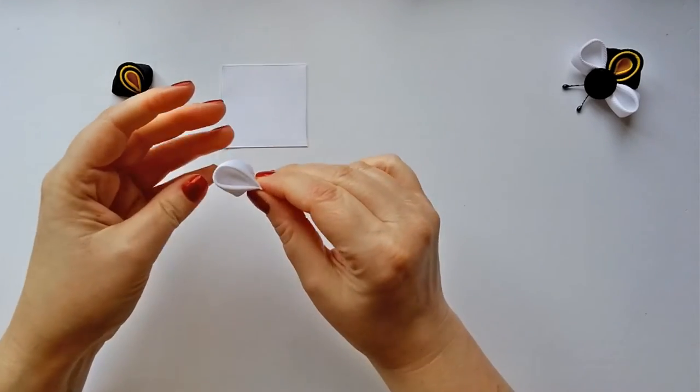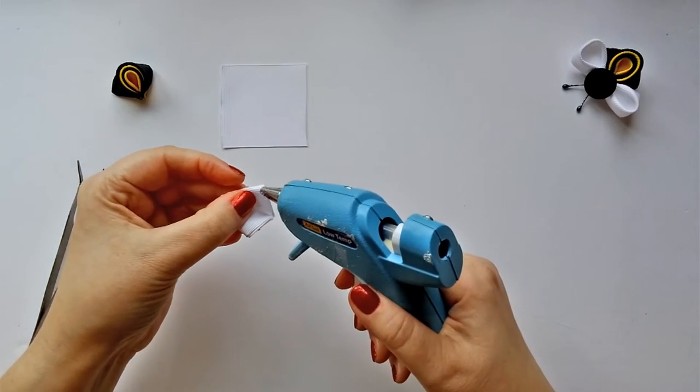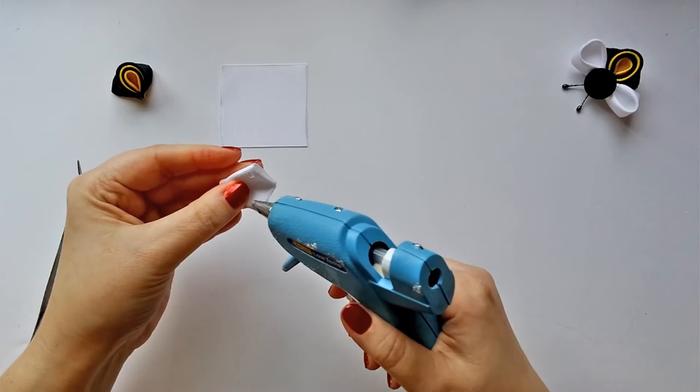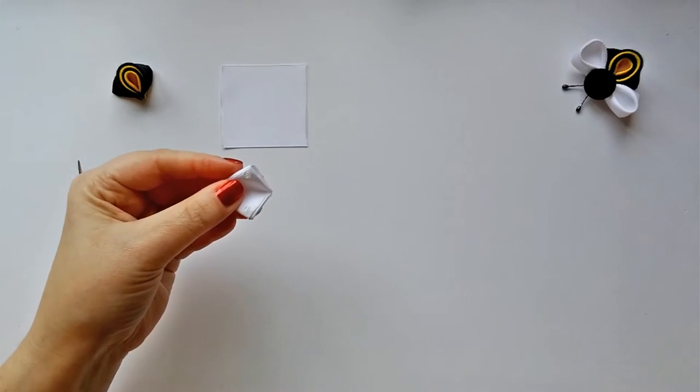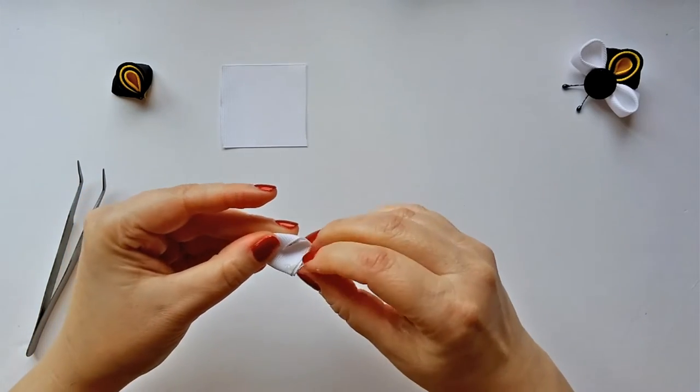Turn your wing over and apply a small dot of hot glue to each of the side points, and then fold each side point in to meet in the center.